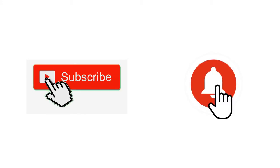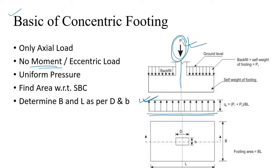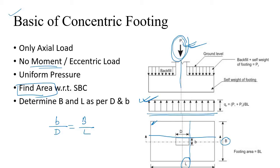Before diving into eccentric footing, let's recap some basic concepts of concentric footing. Here, only an axial load is applied — there is no moment and no eccentricity between the axis of the column and the load. As a result, the pressure distribution is uniform. If you know the bearing capacity of the soil, you can find the required area to carry this load, and once you have that area you can find the length and breadth. You must maintain the ratio of breadth to depth of the column equal to the ratio of breadth to length of the footing, to ensure equal bending moment in each direction.